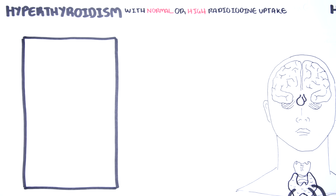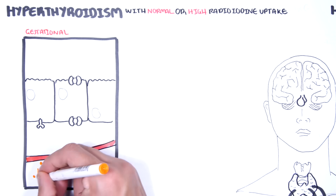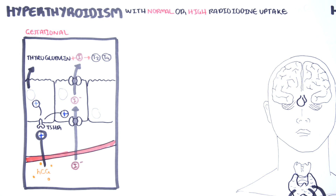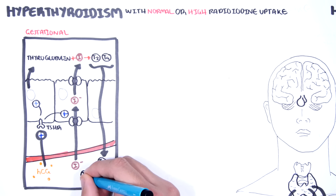A very interesting cause of hyperthyroidism occurs during early stages of pregnancy, when beta-HCG — the pregnancy hormone — is produced by the fertilized egg. At very high levels, human chorionic gonadotropin not only interacts with its cognate luteinizing hormone receptors, but also cross-reacts with thyroid-stimulating hormone receptors. This results in a physiological increase in thyroid hormone synthesis and a decrease in TSH levels. In some women, this mechanism can lead to overt hyperthyroidism during pregnancy.